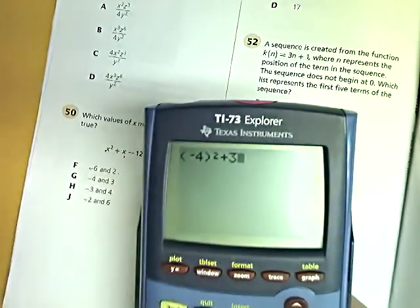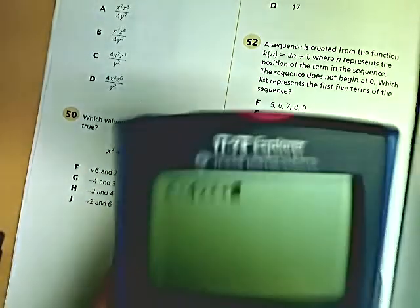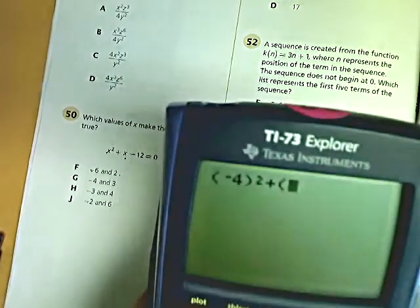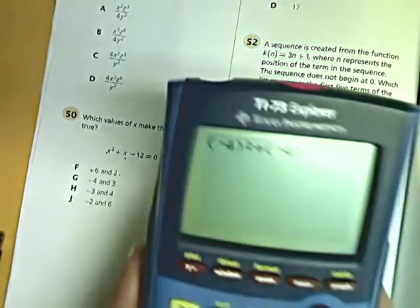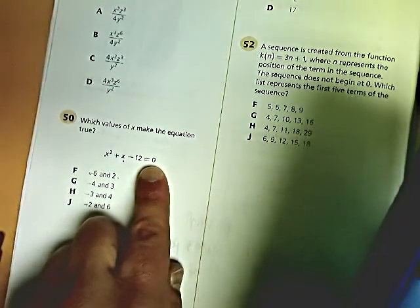So, no. Because these are both x's. So you have to plug in the same thing for both of them. So you go in where that plus x is and put parentheses and do minus 4, just like this. Then hit enter, and you get 0, which is exactly what you're supposed to get.